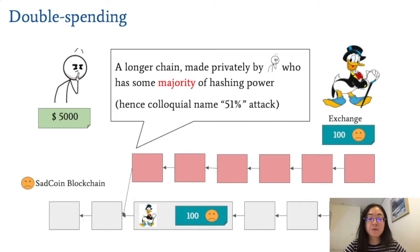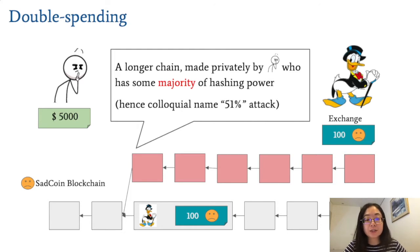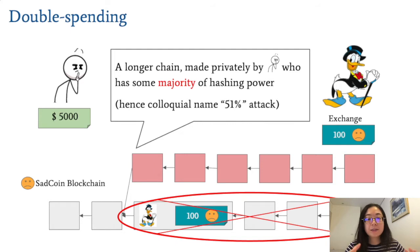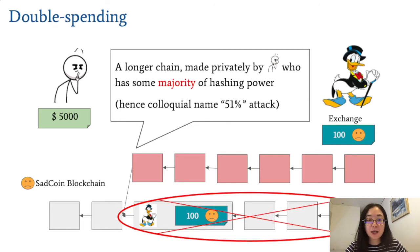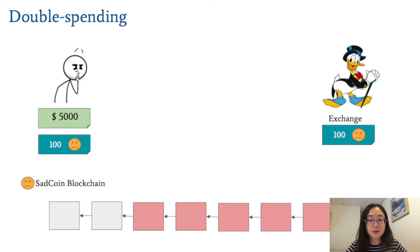He's able to secretly create a longer chain — the one in red here — which excludes the transaction that gave the exchange the 100 SAG coins. Since the red chain is longer, even honest parties will turn to this chain instead and revert the shorter gray chain below, which is the one with the transaction. So our thief in the end ends up with both the $5,000 and his 100 SAG coins back, to be double spent later.